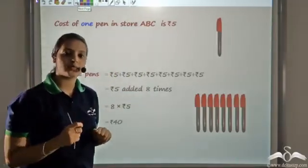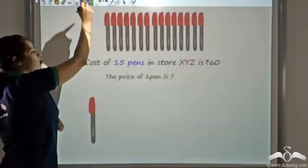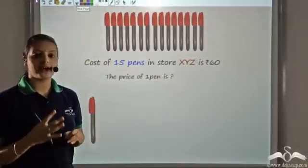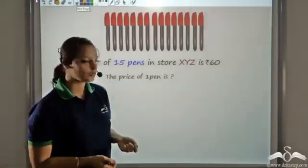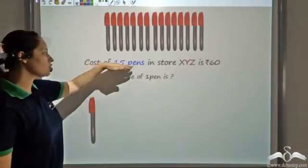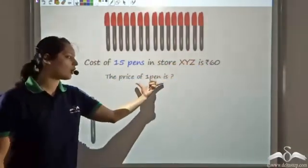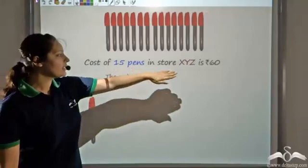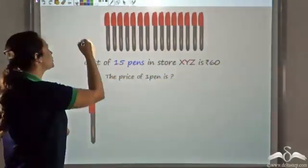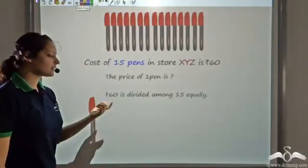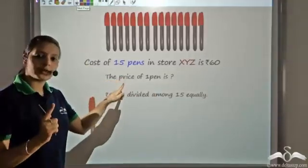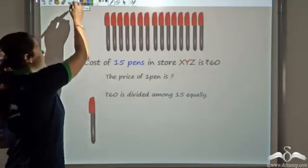Now there is another shop, XYZ. There I know that 15 pens cost Rs 60. I will find the price of 8 pens and then compare the prices of the two shops. First I need to find the price of 1 pen. I know the cost of 15 pens is Rs 60, so the Rs 60 have to be divided equally among 15 pens, since each pen would cost the same.